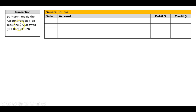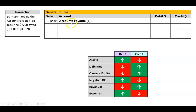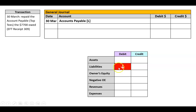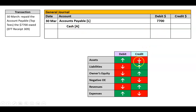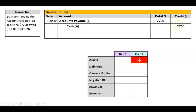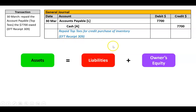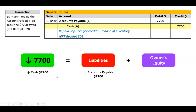30th of March: repay accounts payable to Top T's, the $7,700 owed. EFT receipt 309 — EFT stands for electronic funds transfer, basically online banking. We've paid back an account payable, which is a liability. When we pay them back we owe them less, so that liability is going down — that would be a debit. We paid with cash, which is an asset, and when we pay cash that asset goes down — so that would be a credit. Narration: repaid Top T's for credit purchase of inventory, EFT receipt 309. In the accounting equation: accounts payable went down $7,700 and cash went down $7,700, so the equation equals negative $7,700 equals negative $7,700 plus zero, and that balances.